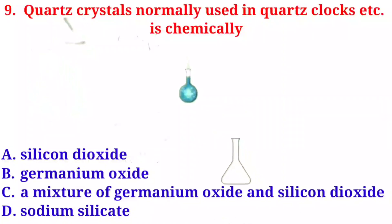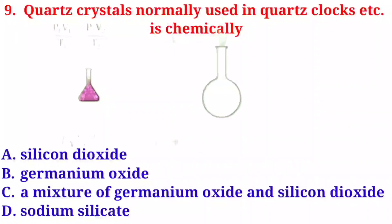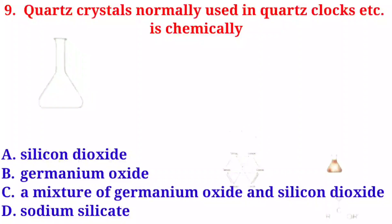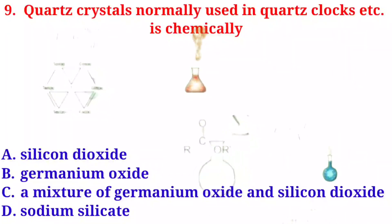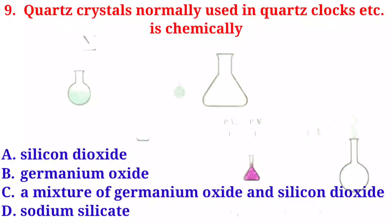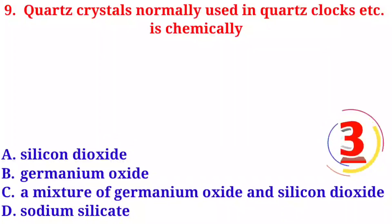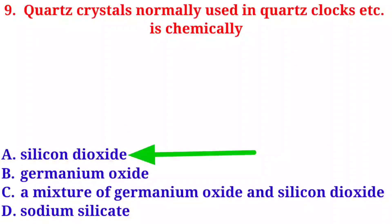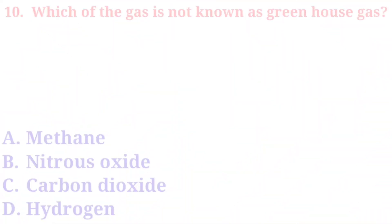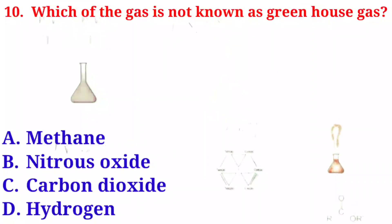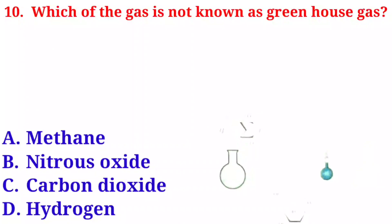Question number nine: quartz crystals, normally used in quartz clocks etc., are chemically — option A: silicon dioxide. Option B: germanium oxide. Option C: a mixture of germanium oxide and silicon dioxide. Option D: sodium silicate. The correct answer is option A, silicon dioxide.